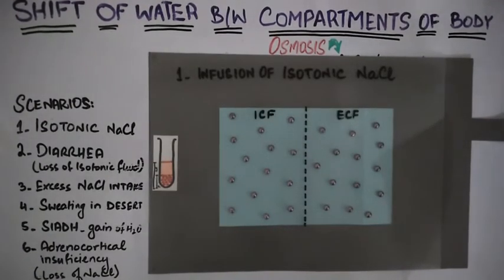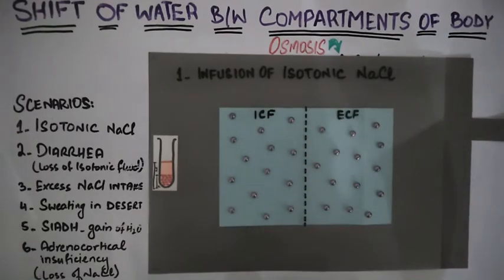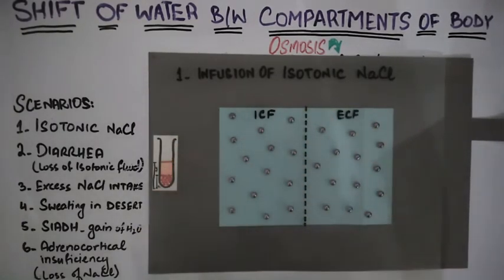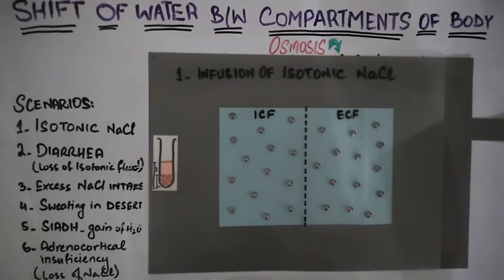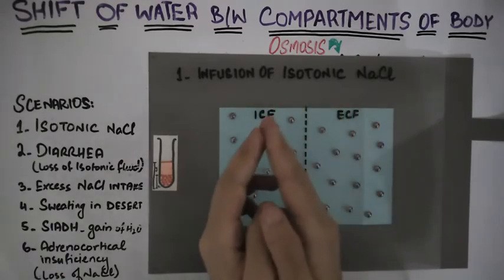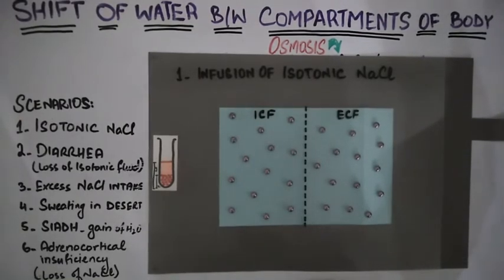Now we will discuss our scenarios. We have two solutions: the ECF (extracellular fluid) and the ICF (intracellular fluid), separated by a semi-permeable membrane — the cell membrane. Although the volume of intracellular fluid is normally twice the extracellular fluid, both are drawn equal here for convenience. Normally, ECF and ICF are iso-osmotic, with osmolarity of approximately 290 osmoles per liter.